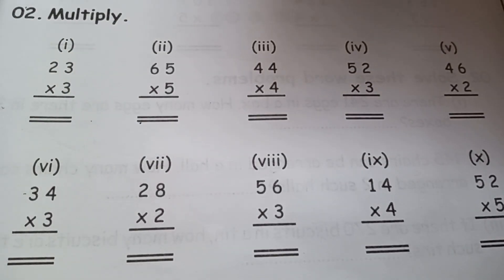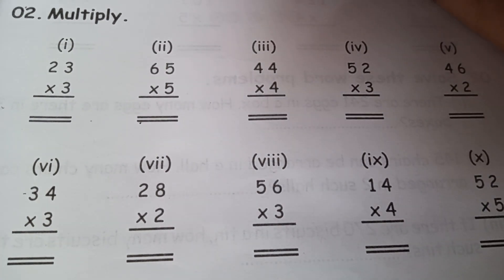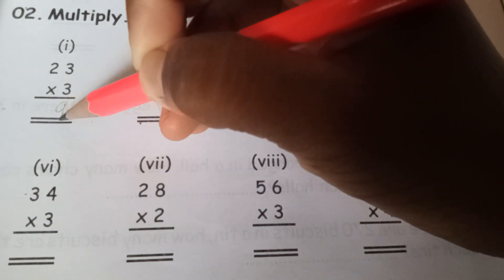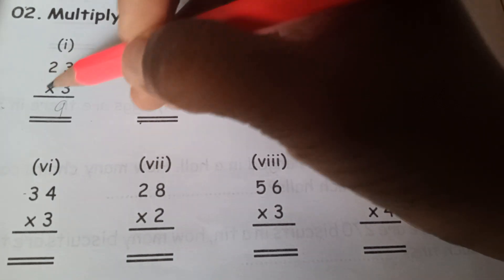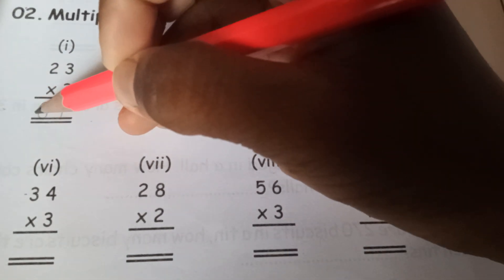Okay, let's do the revision on multiplication. Today Alicia is ready to explain the sums, so we'll start the activity. Alicia, read the numbers: 23 times 3. How are you going to multiply this? 3 times 3 is 9, write 9. 3 times 2 is 6. So what will be the answer? 69.